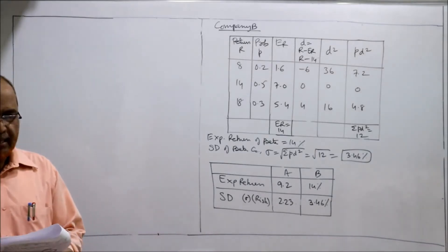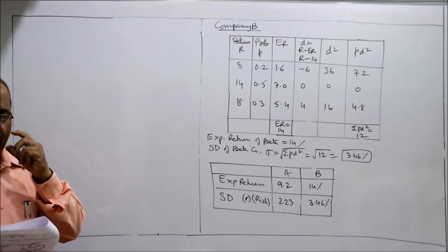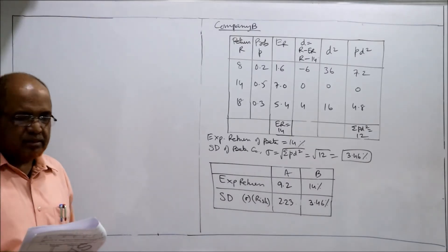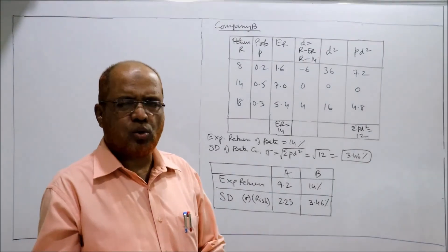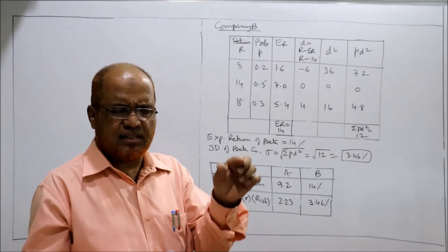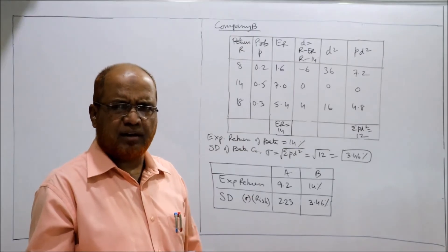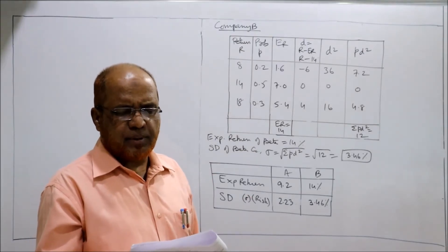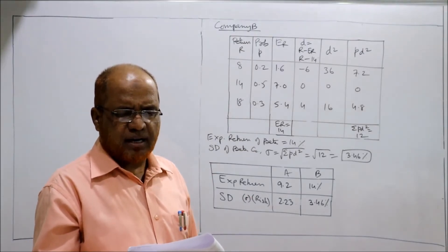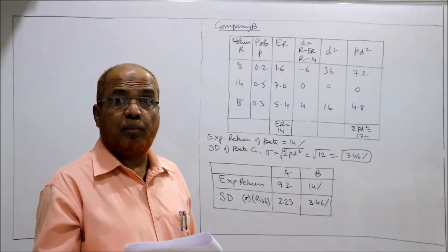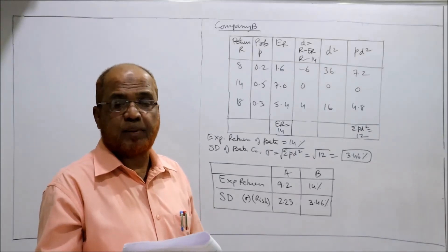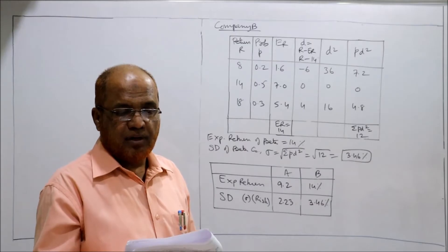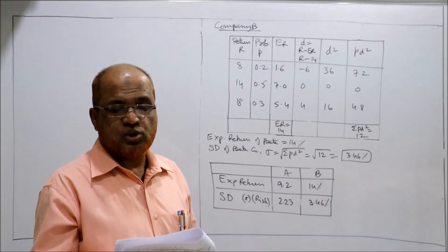Now the next problem: calculate the standard deviation for the following two companies. States of economy are A, B, C, D, E. Company X returns are minus 8, 10, 8, 5, minus 2, and probabilities are given. We multiply the probability to get the expected return. This problem asks only for standard deviation calculation.